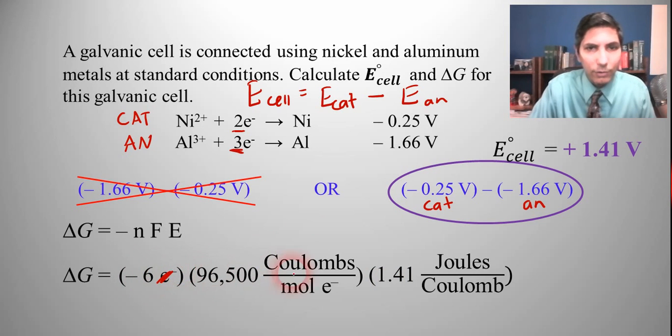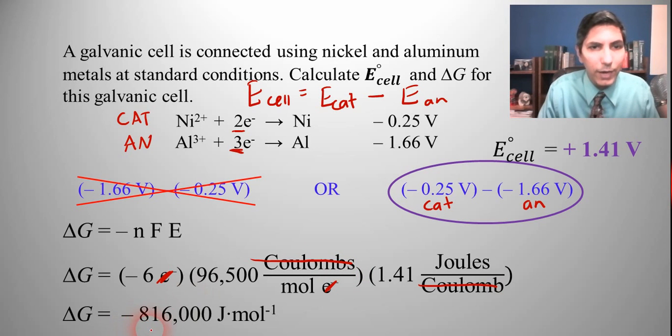But if we cancel out electrons top and bottom, we can cancel out coulombs top and bottom. And we have the numbers, the delta G gives us negative 816,000, and the units are joules per mole. And so that's our delta G.